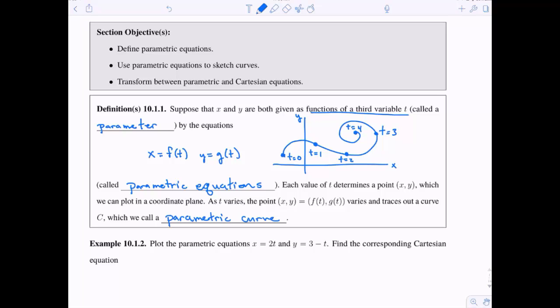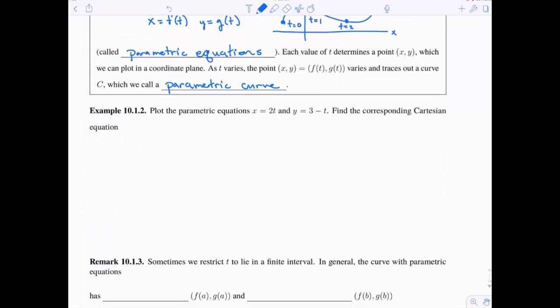Okay, so let's get some practice with a little more specifics here. So I'm going to plot the parametric equations x equals 2t and y equals 3 minus t. So now I have particular equations. And then I'm going to find the corresponding Cartesian equation. So in order to plot this thing, let me go ahead and make a table.